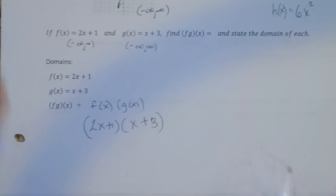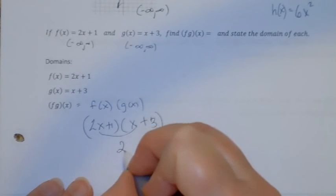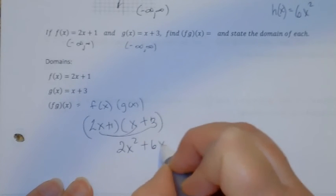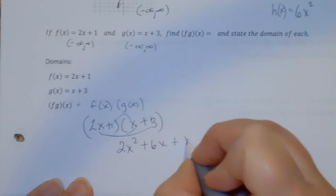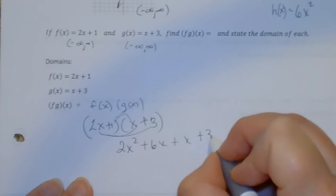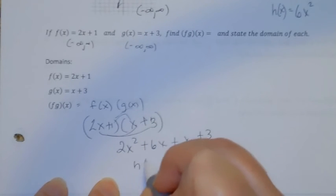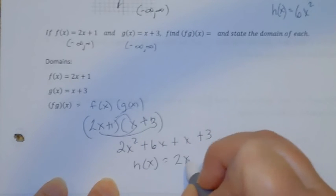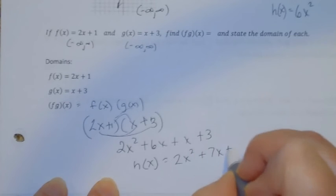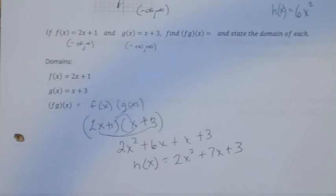So when I multiply, I get 2x squared plus 6x plus x plus 3. So the new function is 2x squared plus 7x plus 3. And this is a quadratic function.